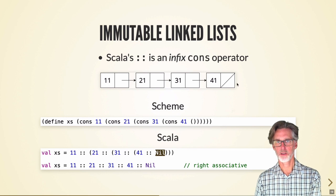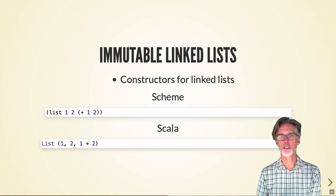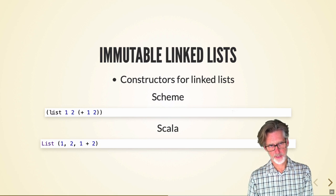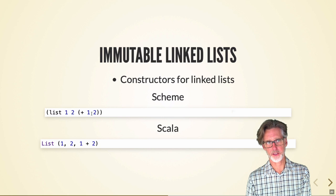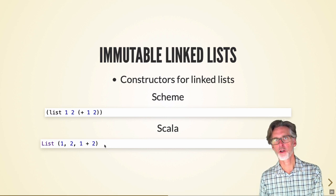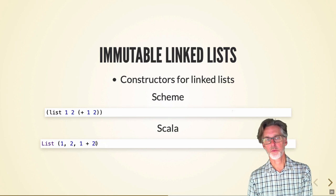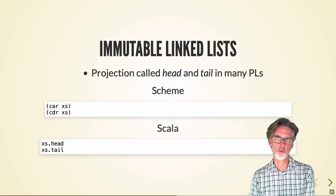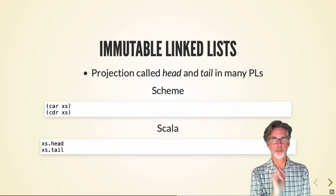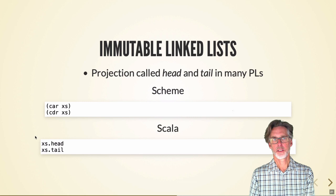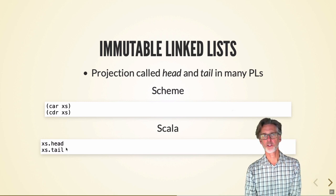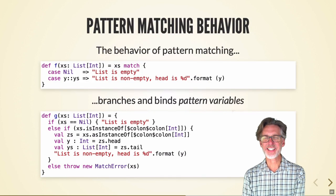For lists it's common to use list constructors instead of the cons operator, just as Scheme has the list function. Scala has a List factory function — you can think of it like a constructor — that builds a list with a given number of elements. Just as we access tuple elements, we also have ways to access the two parts of a linked list cell. In Scheme these had the names car and cdr; in Scala we have the more conventional names head and tail.